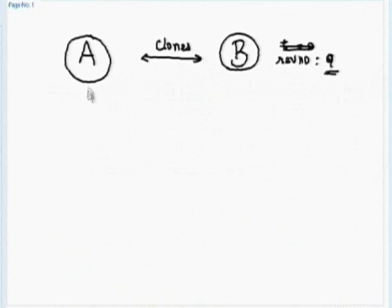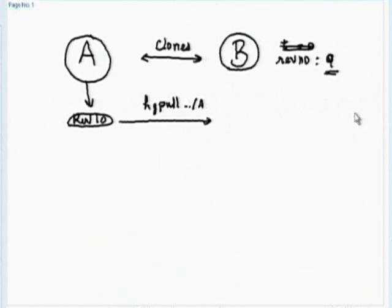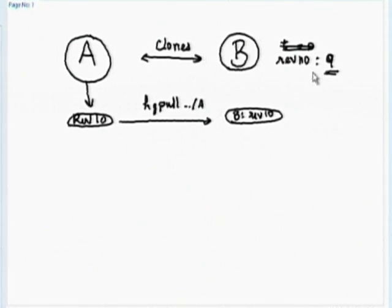Now what do I do? I make a new change — A goes to revision number 10. Now I want to get the changes to B from A. I do hg pull ../A and this will also become B's revision number 10. But actually what happens is the changes are pulled, but B's working directory will still be pointing to number 9 because I did not do an update.